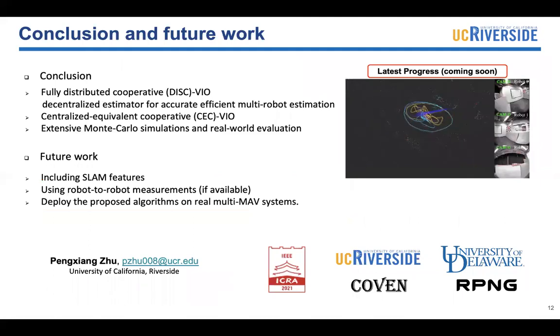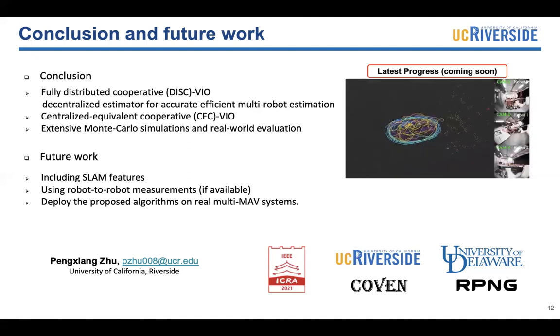In conclusion, in this paper, we propose two algorithms. The first is a fully distributed algorithm, the DISC-VIO. The second is the centralized equivalent algorithm, CEC-VIO. We use Monte Carlo simulations and a real-world dataset to evaluate their performance. In our future work, we will consider including SLAM features to improve the performance. And also, we want to use robot-to-robot measurements when one robot is in the field of view of another robot. The last thing is that we want to deploy our proposed algorithms on a real multi-MAV system. That's it. Thanks.